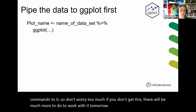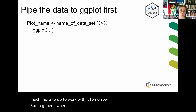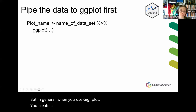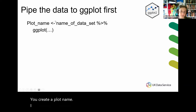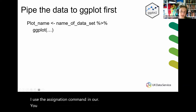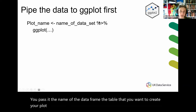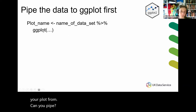In general, when you use ggplot, you create a plot name using the assignation command in R, you pass it the name of the data frame — the tibble that you want to create your plot from — and you pipe the command ggplot.